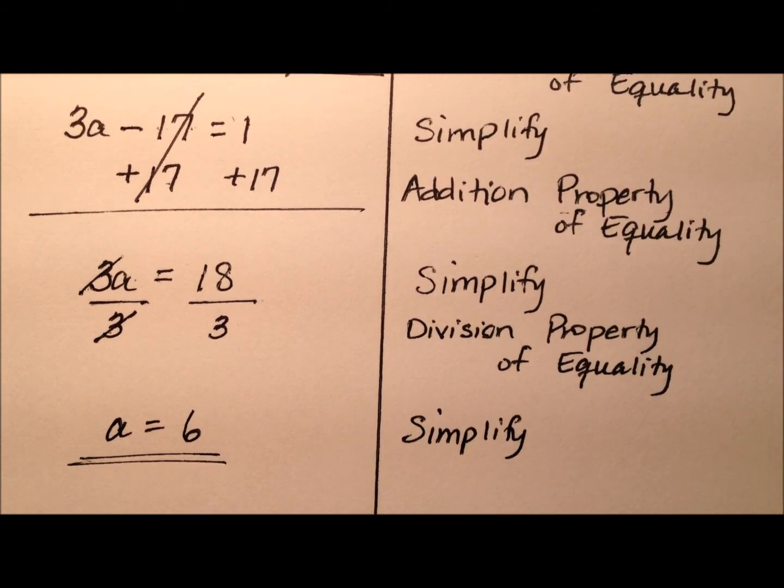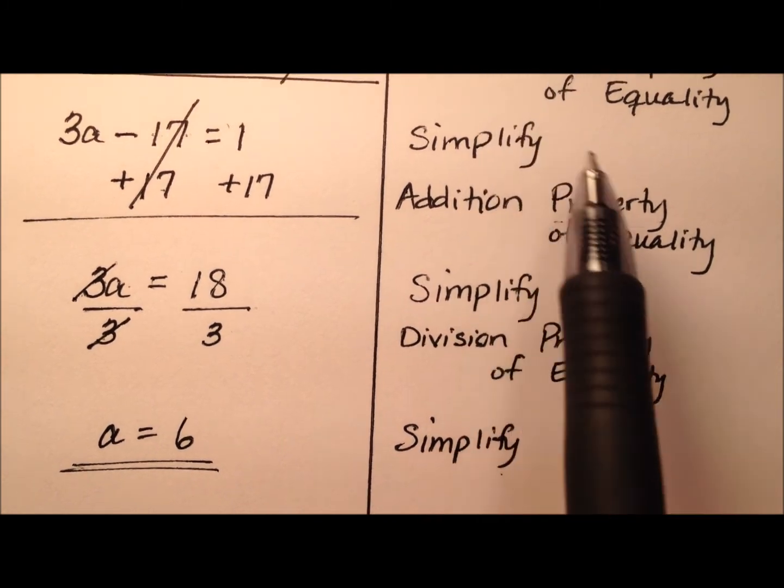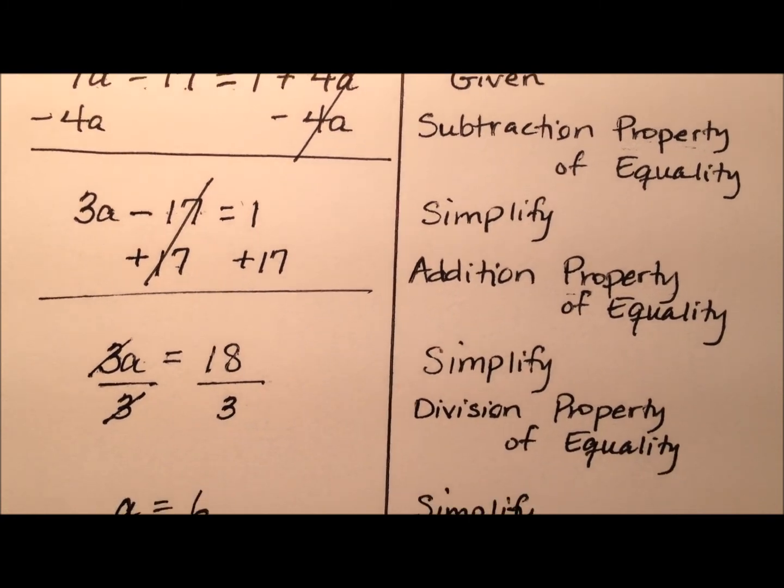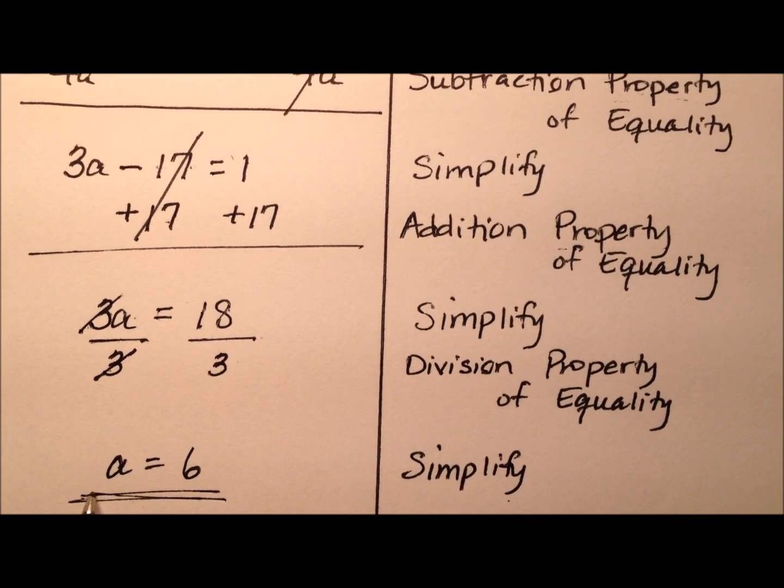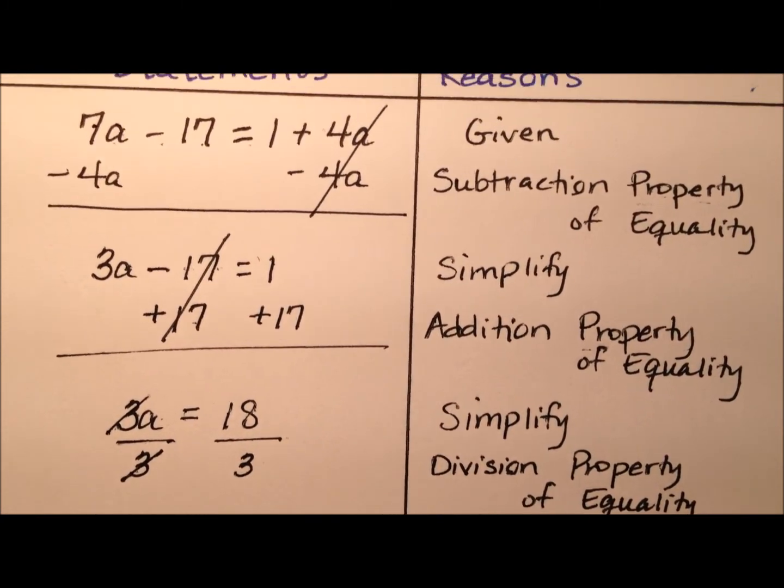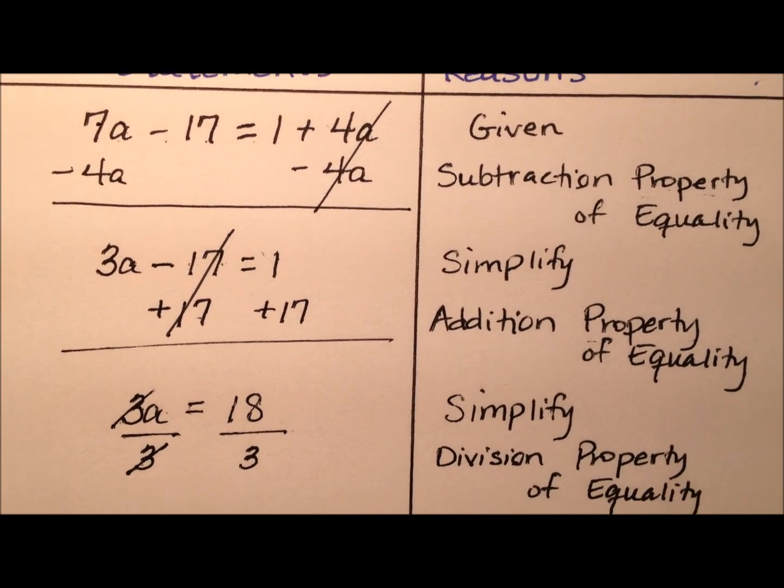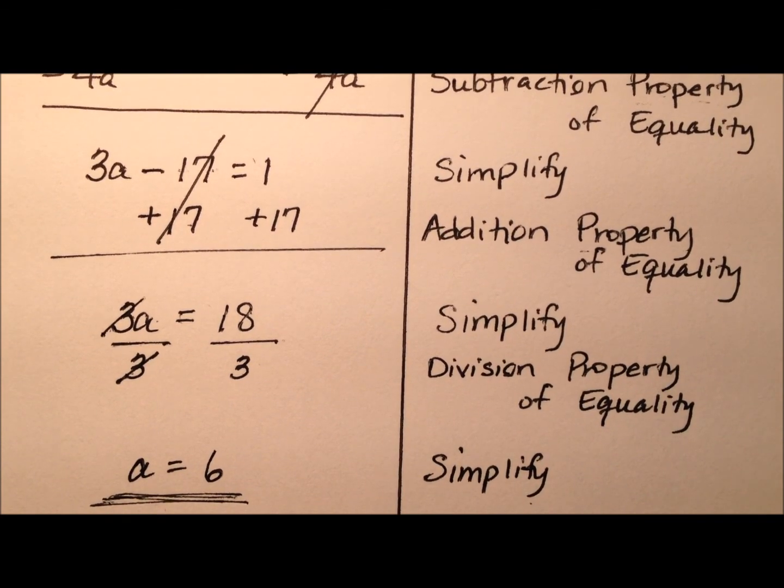So I now have the value of a. I see that a equals 6. And I have included justification for every single step that I took along the way to facilitate the solution for this equation. So let's go back to the top and see what this looks like all the way down to the bottom. There's that example.